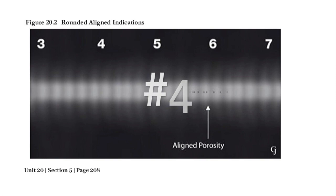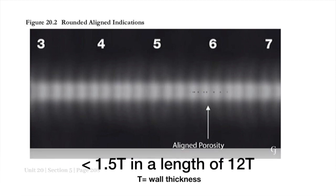Four: aligned rounded indications are acceptable when the sum of the diameters of indications is less than 1.5T in a length of 12T, T being the wall thickness.